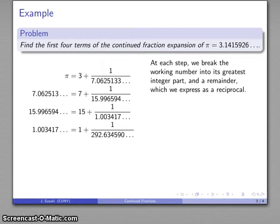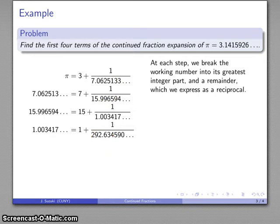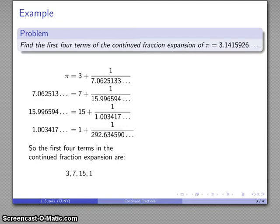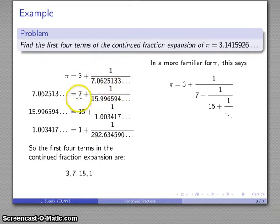One caveat: these values are only as good as our original decimal approximation to pi. If I had pi to an infinite number of decimal places I could recover the indefinite sequence of the continued fraction expansion, but because I have pi to a limited number of decimal places I'm confident about the first couple of values but I'd hesitate to go further. So I'll stop there. The first four terms of the continued fraction expansion are 3, 7, 15, 1, and then some other terms. More conventionally, we express this as 3 plus 1 over 7 plus 1 over 15 plus 1 over 1 plus and so on.